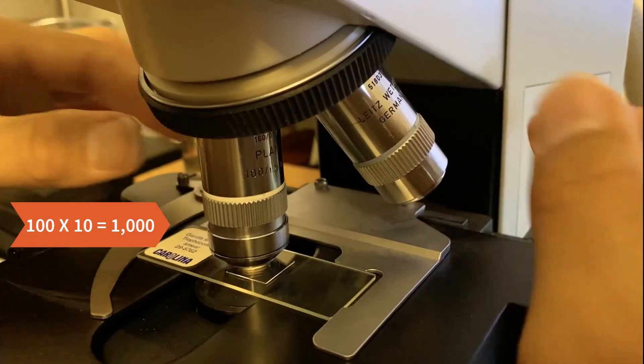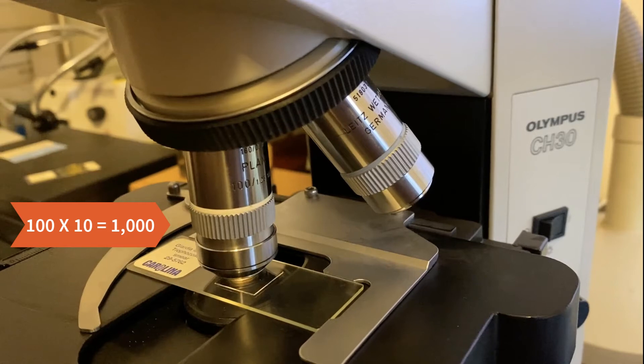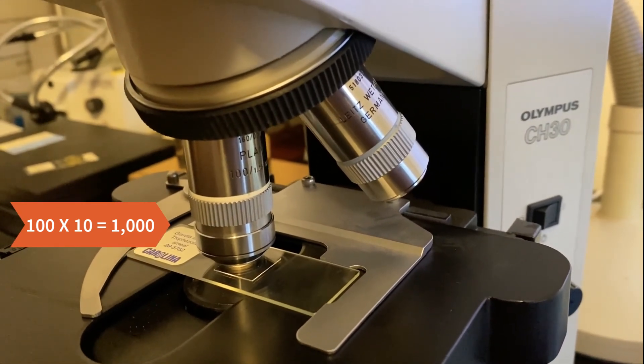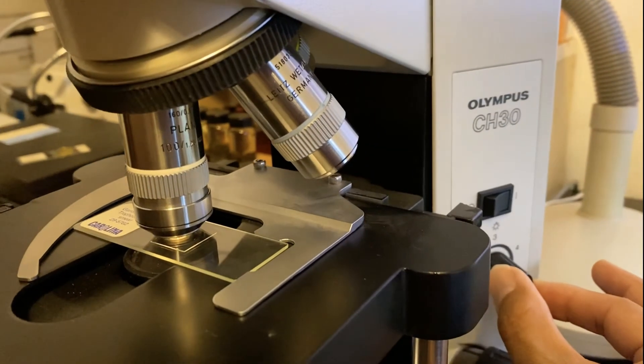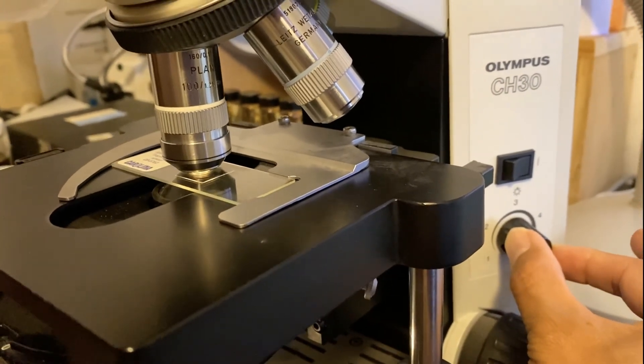Again, 100 times multiplied by the eyepiece, which is 10 times, that is now at a thousand times magnification. And I can use my fine adjustment to bring this specimen into focus. Giardia in particular is super small, so you have to be very careful using that fine adjustment.